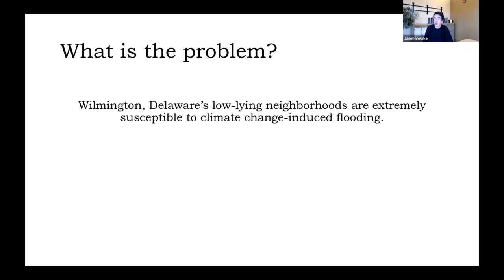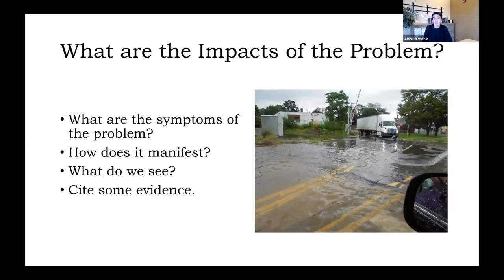So this is a much clearer, much more specific problem definition: Wilmington, Delaware's low-lying neighborhoods are extremely susceptible to climate change-induced flooding. That's very specific. Next, we want to identify the impacts of the problem — the symptoms, the observable things that are felt because this problem exists. How does it manifest? What are we seeing? We're going to need evidence here, using in-text citations of sources.